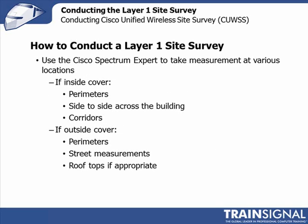To identify sources of interference, we would use the Cisco Spectrum Expert tool — turn it on and start collecting measurements. There's really no fixed recipe for exactly how and where to take measurements. We can't tell you in an office environment to stop every 5 feet, or in a warehouse to take a measurement every 10 feet. How you do the measurements depends on many factors. For instance, if I saw a lot of interference devices like wireless cameras and cordless phones, I would take more time and collect more measurements.